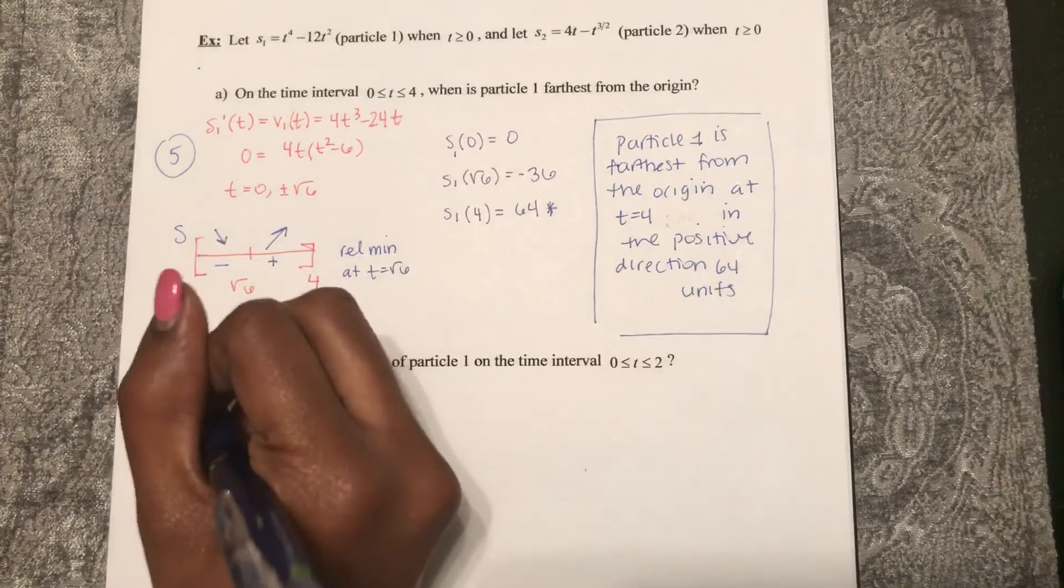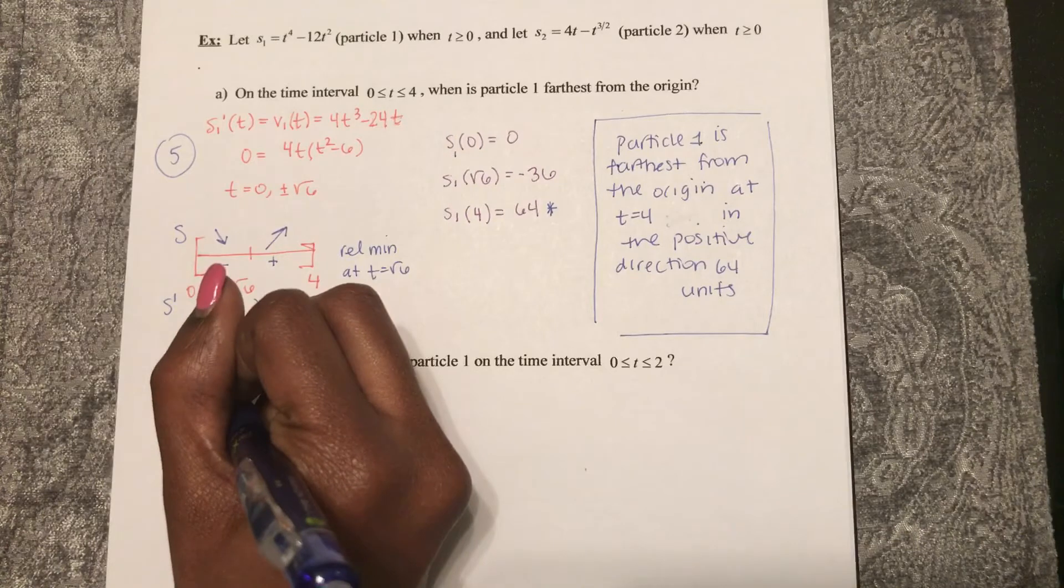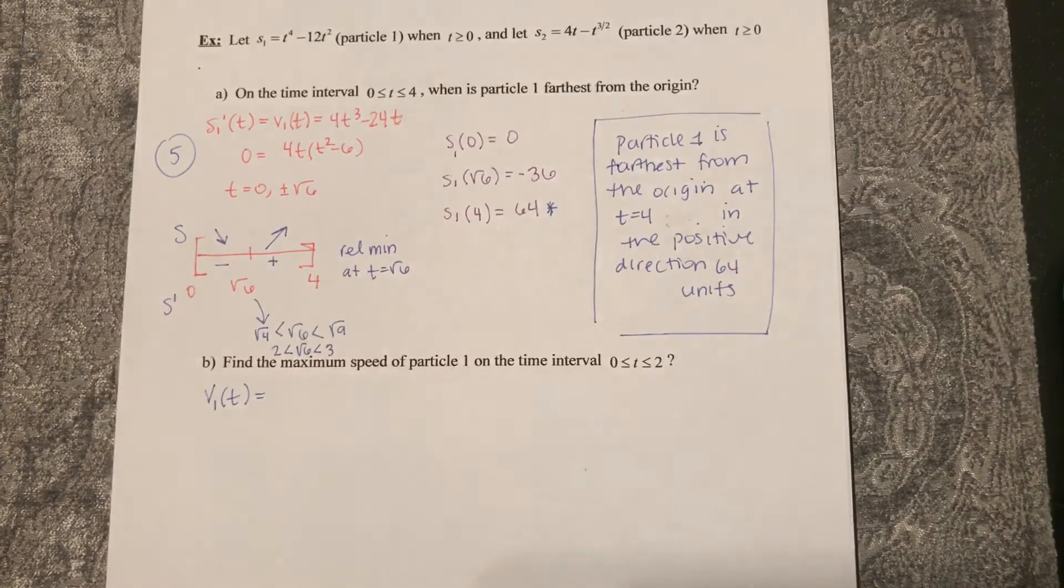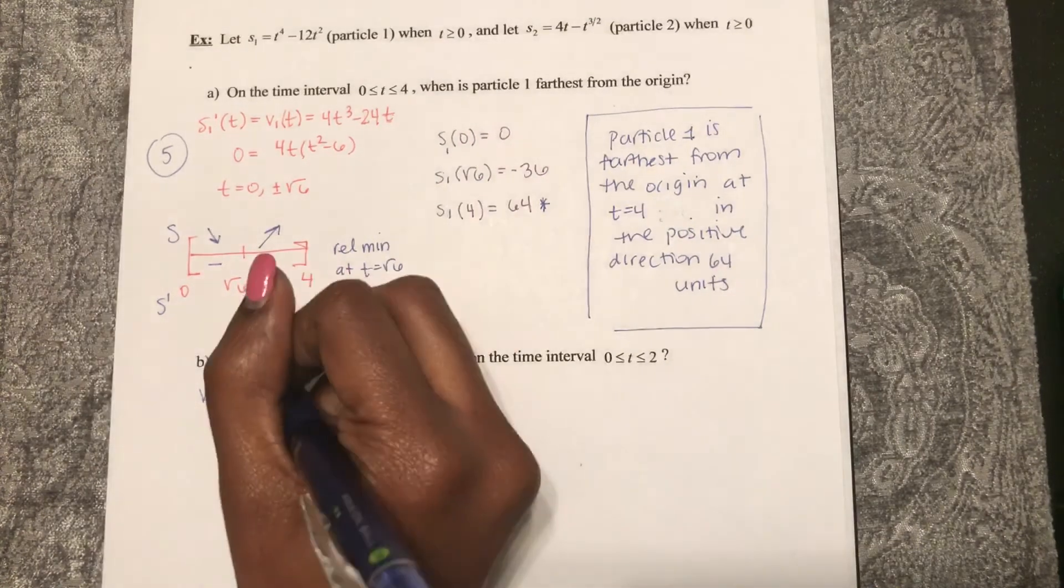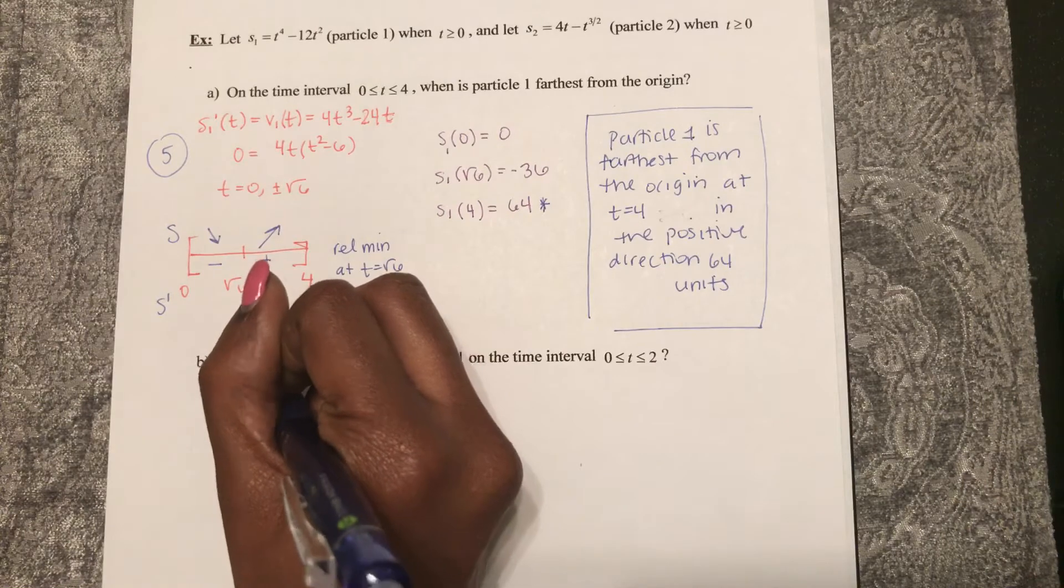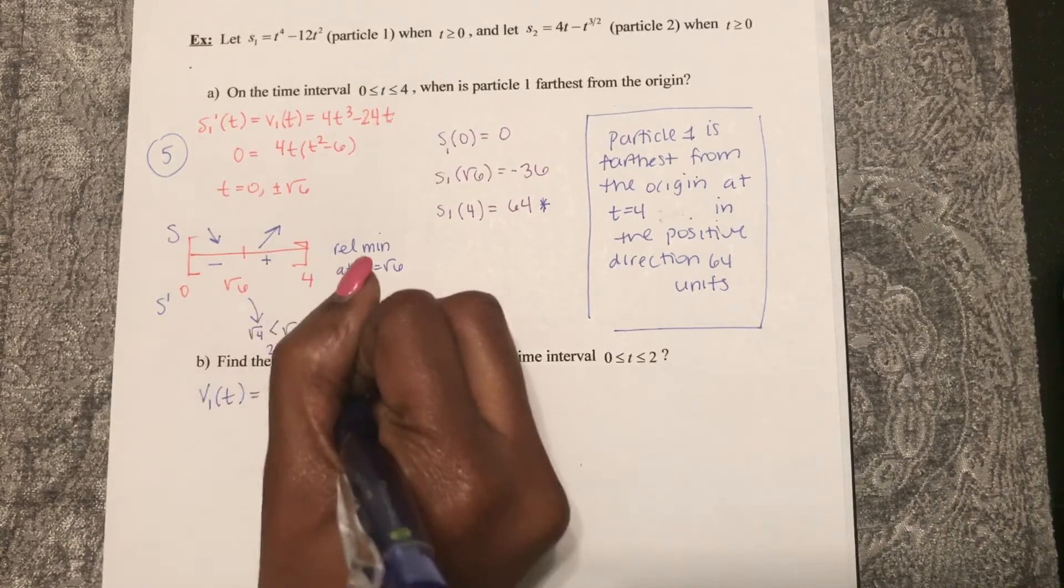Remember from the problem above, V of t for our first particle is the function 4t cubed minus 24t.